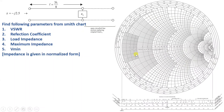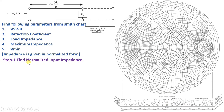Here we have the Smith Chart, and in this Smith Chart, we will initially be placing the input impedance point, which is -j2.5. We need to identify the normalized input impedance, but it is already normalized as given in the question. So this is our input impedance: -j2.5.